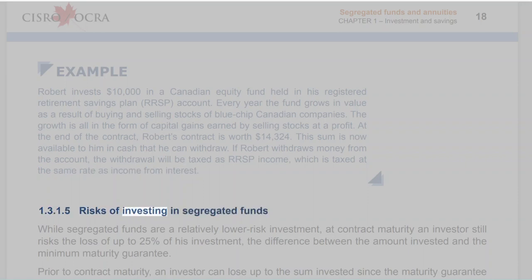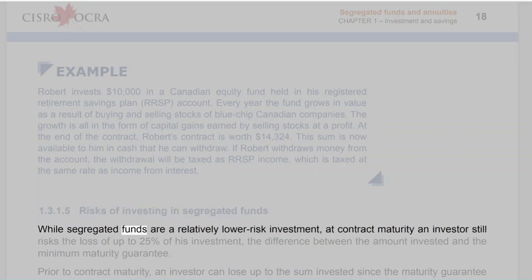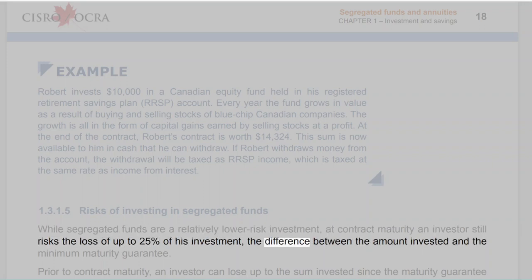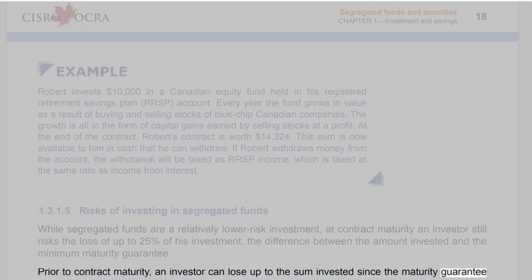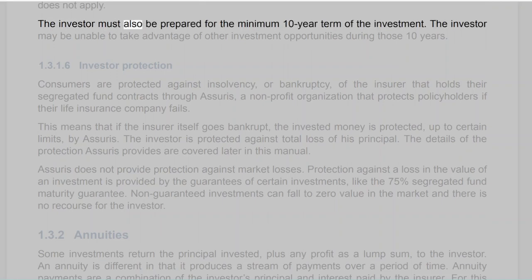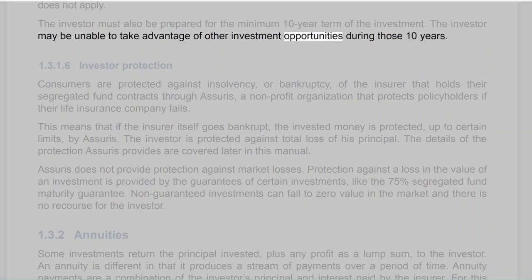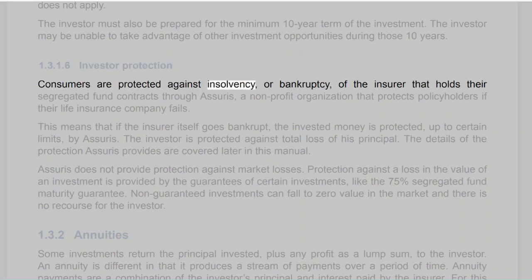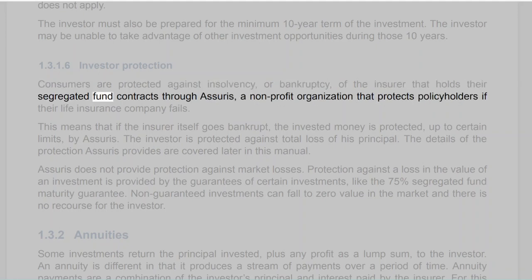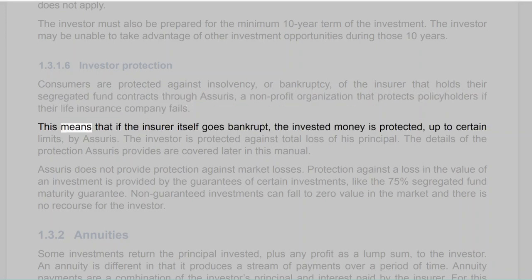Section 1.3.1.5: Risks of Investing in Segregated Funds. While segregated funds are a relatively lower risk investment, at contract maturity an investor still risks the loss of up to 25% of his investment — the difference between the amount invested and the minimum maturity guarantee. Prior to contract maturity, an investor can lose up to the sum invested since the maturity guarantee does not apply. The investor must also be prepared for the minimum 10-year term and may be unable to take advantage of other investment opportunities during those 10 years. Section 1.3.1.6: Investor Protection. Consumers are protected against insolvency of the insurer through Assuris, a non-profit organization that protects policyholders if their life insurance company fails, up to certain limits.